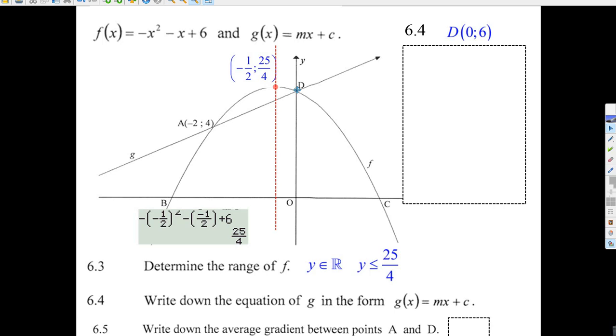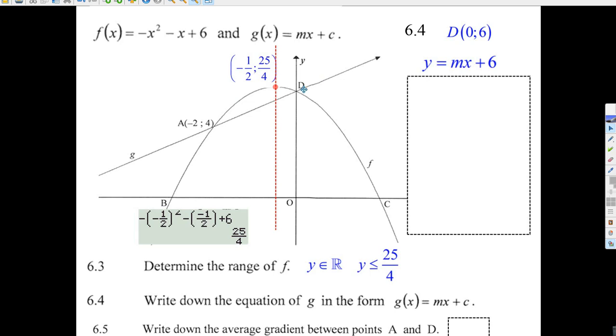Well, do you know that the equation of a line is y equals mx plus c, and we know that D is the y-intercept. We can just put c in there for the y-intercept. We can put 6 in there.